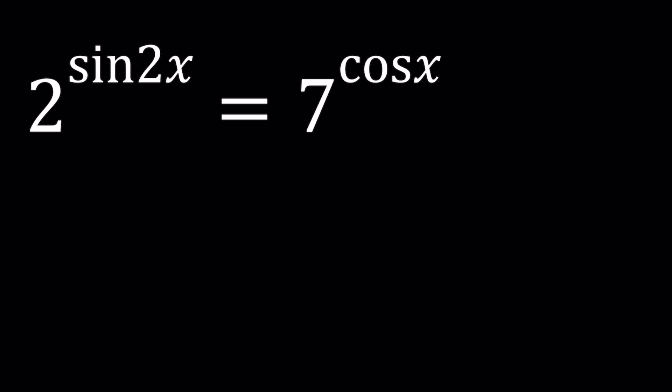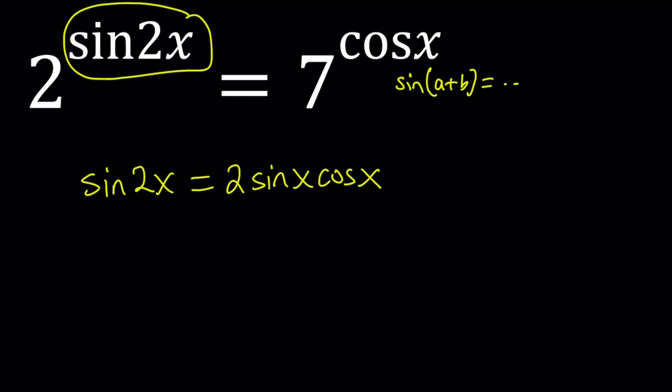So let's start by using an identity for sine 2x. That's a double angle formula you should know if you're doing trigonometry. Sine of 2x can be written as 2 times sine x cosine x. This comes from the sum formula sine a plus b. If you replace a and b with x you get the answer. So let's go ahead and replace this sine 2x with that. We're going to get 2 to the power 2 sine x cosine x equals 7 to the power cosine x.